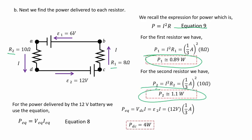For the power delivered by the 12 volt battery we use equation 8. After substitution the power across point D and C is 4 watts.